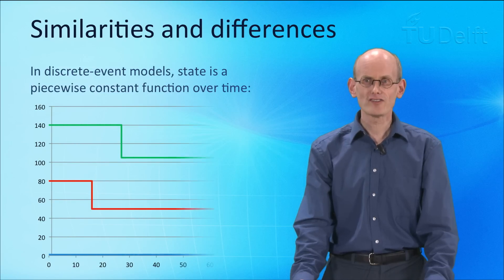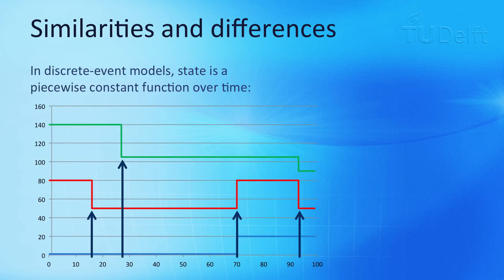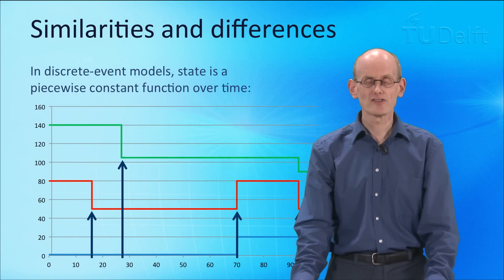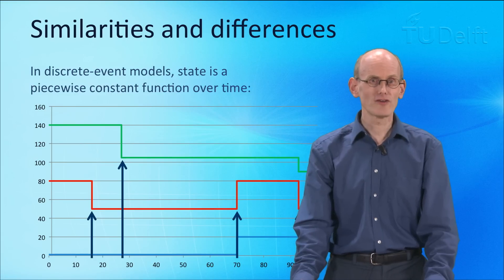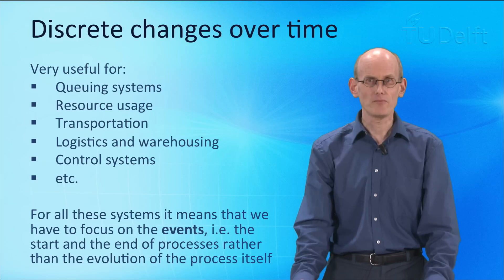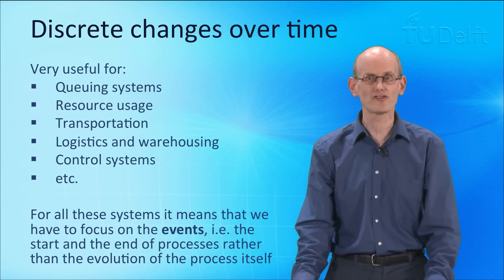Only at discrete instances does the function change its value — for example at time 17, time 27, time 70, and around time 95. The values change exactly at that point in time and don't change in between. This also makes discrete event simulation models pretty fast, because the state only has to be changed at these points in time. This makes it very useful for queuing systems, resource systems, transportation and logistics, but also for control systems.